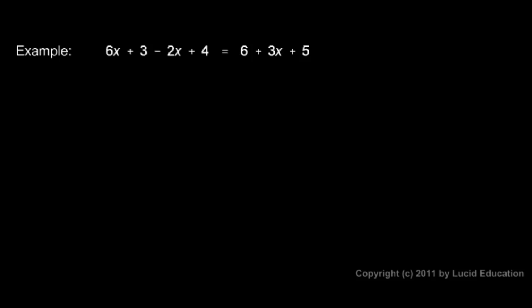Just take a look at it, see what you're looking at, and see what starts to make sense. On this example, you can see that on the left side I have 6x and a minus 2x. Those are like terms. And I have a 3 and a 4. Those are like terms.